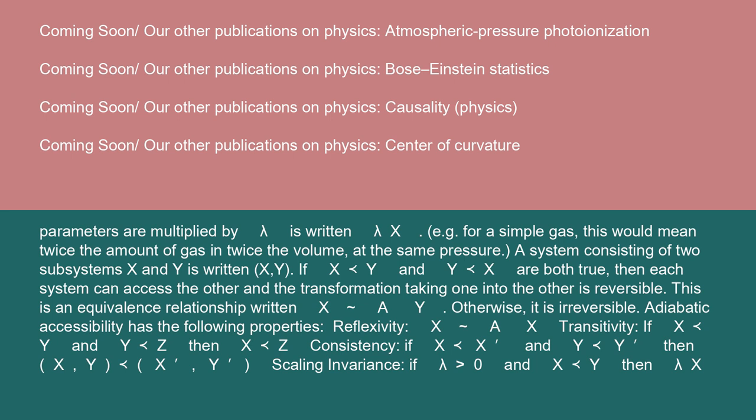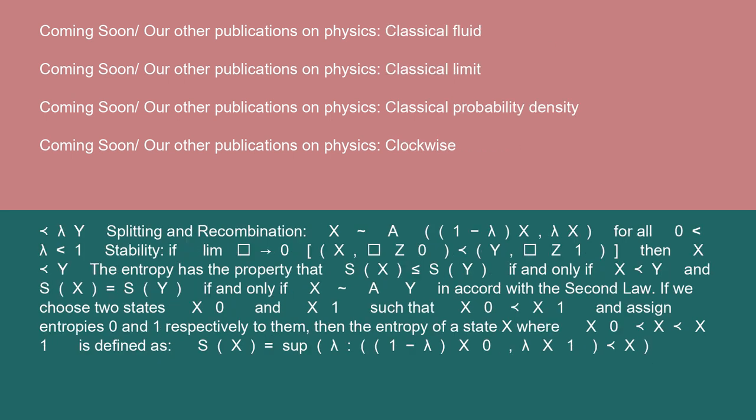Splitting and Recombination: X tilde operator a (1 minus lambda) X, lambda X, for all 0 less than lambda less than 1. Stability: If lim epsilon to 0 (X, epsilon Z-0) precedes (Y, epsilon Z-1), then X precedes Y.